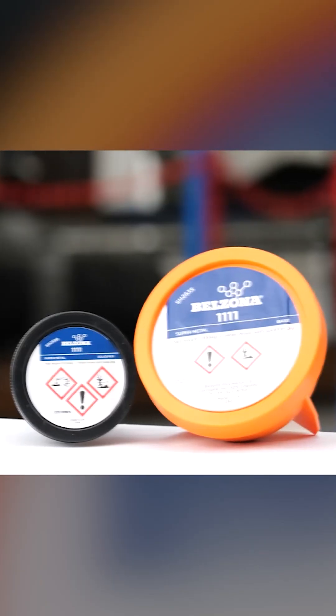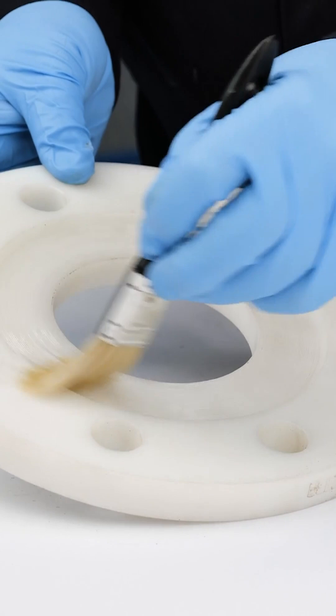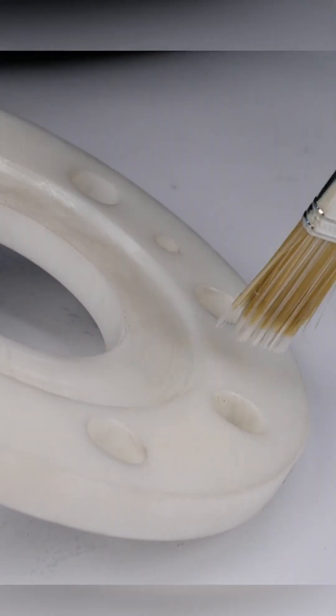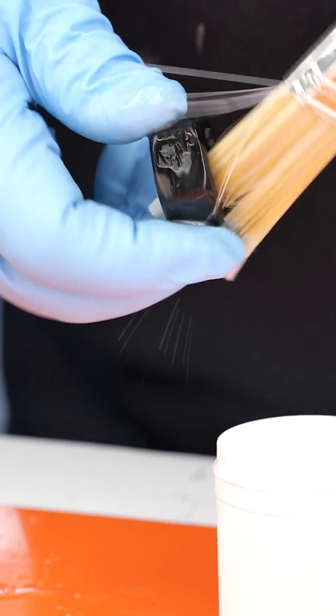Flange Face Forming and Protection with Belzona 1111. First, apply Belzona 9411 release agent to the prefabricated mold or former. Next, apply Belzona 9411 release agent to all fasteners.